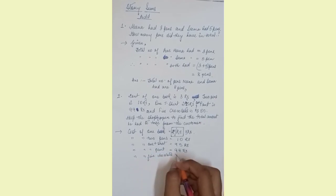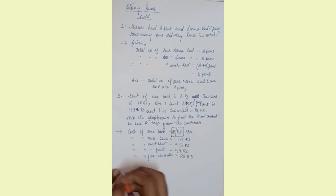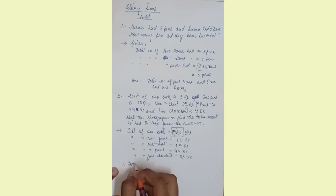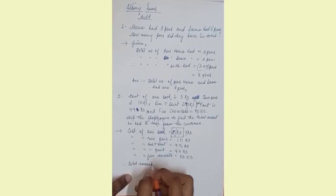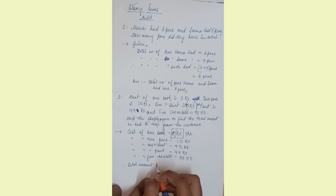Cost of one paint is equal to 99 rupees. Cost of five chocolates is equal to rupees 50.